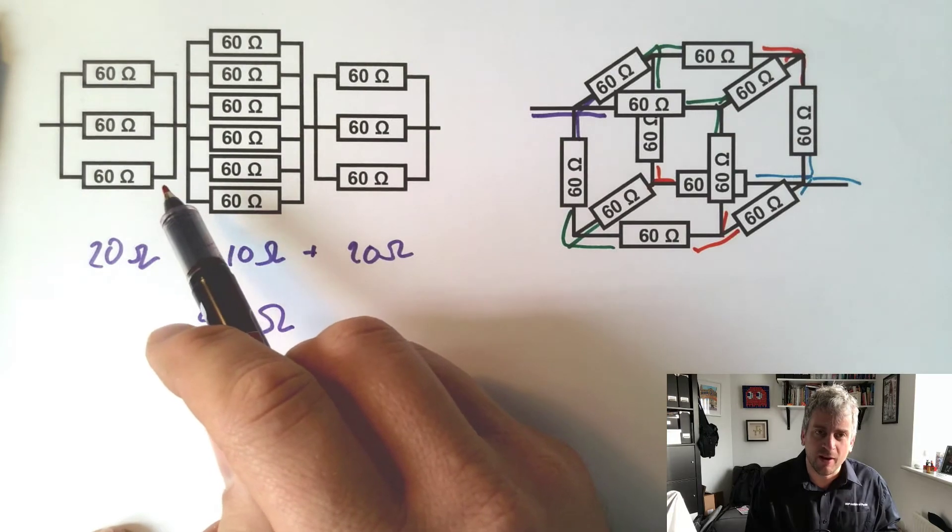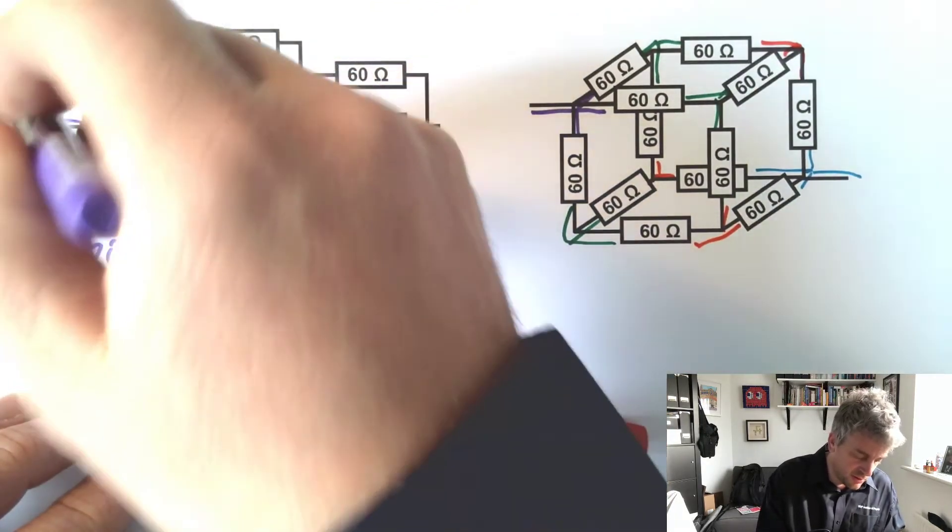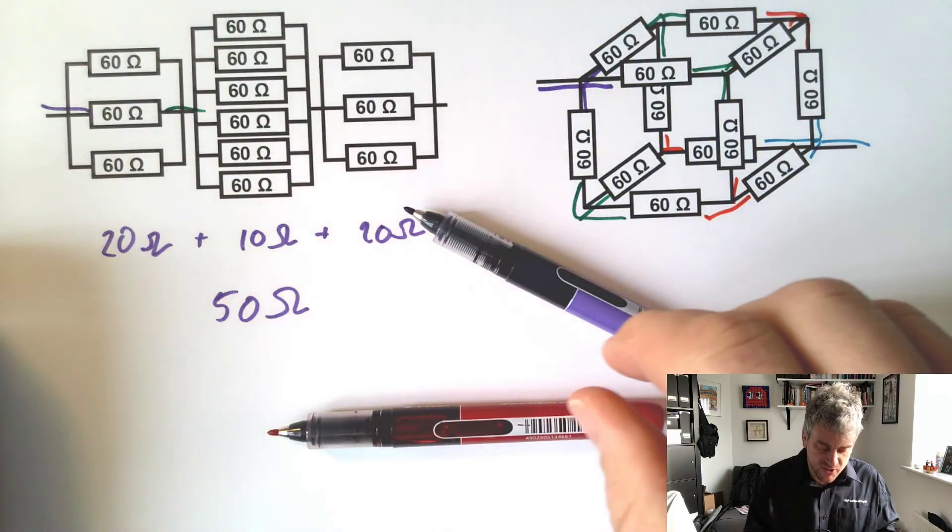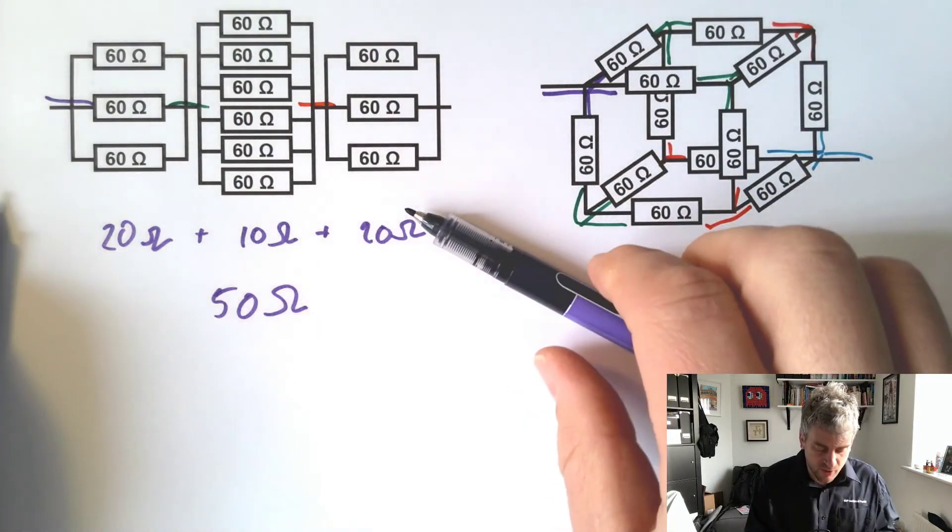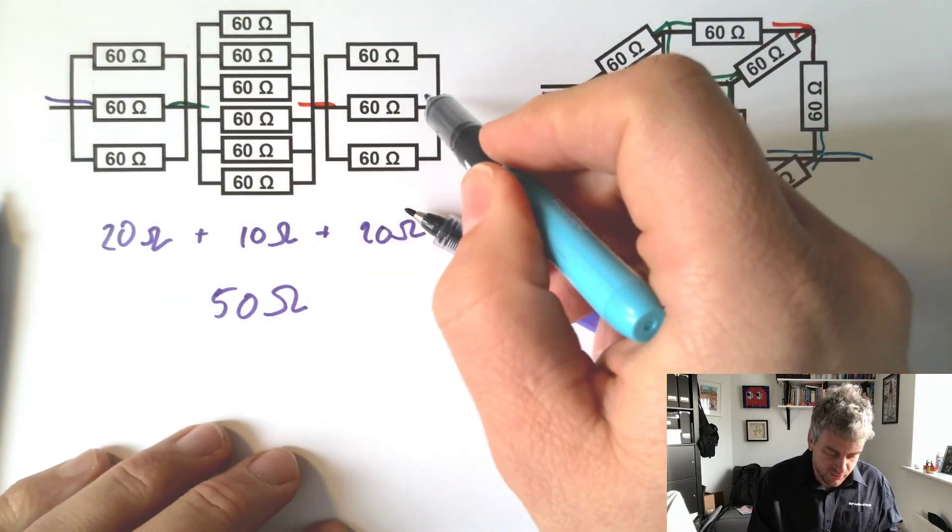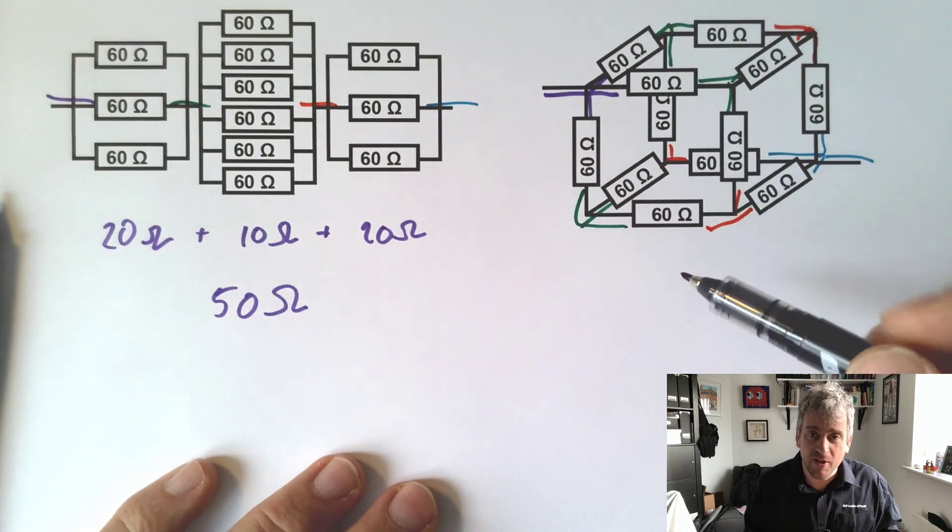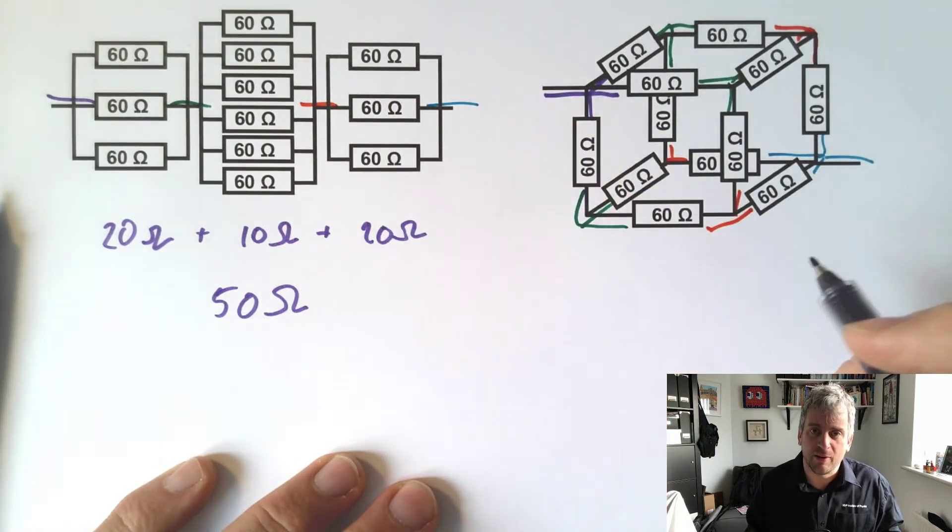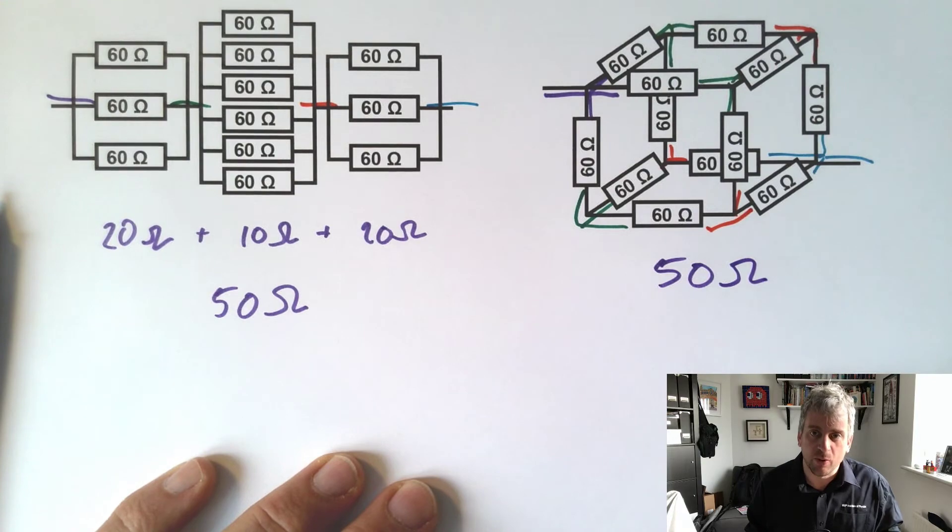That's basically what we drew over here. We've got three resistors coming in on purple, going from purple to green. Then we've got six resistors going from green to red, and then we've got three resistors going from red to turquoise. So the very surprising result is that this is an identical layout to this, and the answer is just 50 ohms.